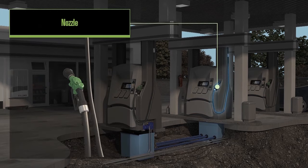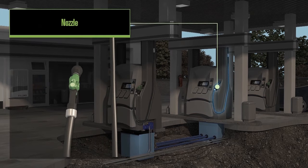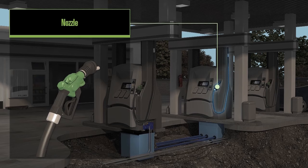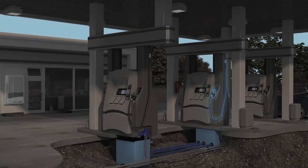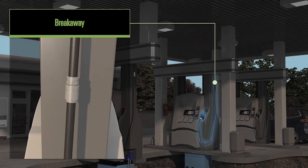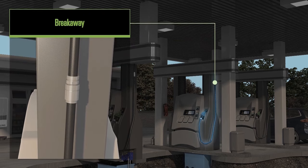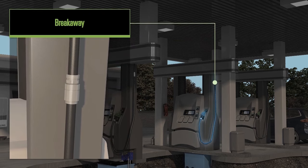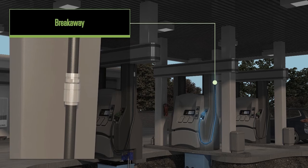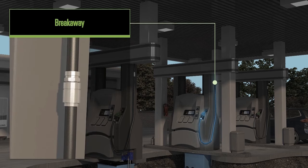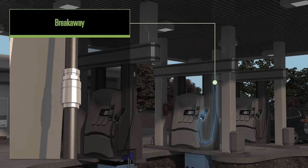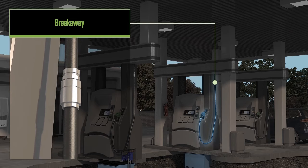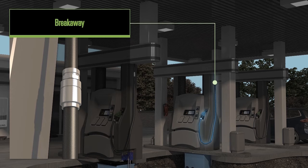Connected to the hoses are nozzles and breakaways. The nozzle is what the customer uses to dispense the fuel into their vehicle. Breakaways are for safety and put in place for those rare moments when someone forgets to take the nozzle out of their vehicle before they drive away. A breakaway, similar to a shear valve, will separate and shut off the flow of fuel to protect the dispenser and fuel from spilling on the ground.